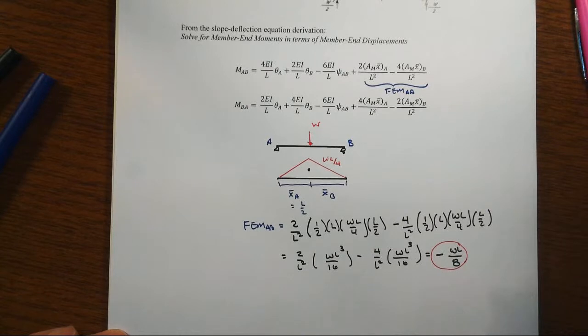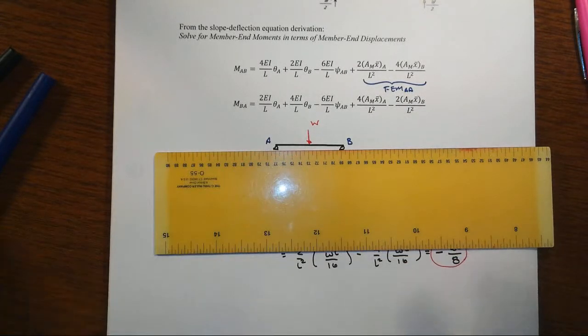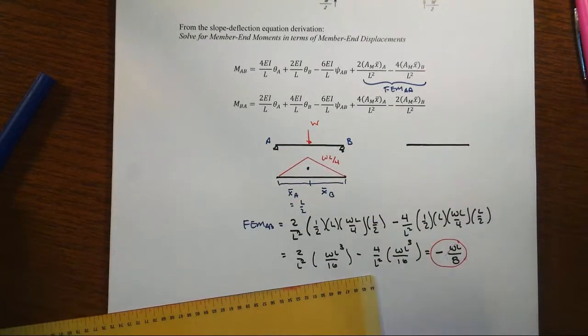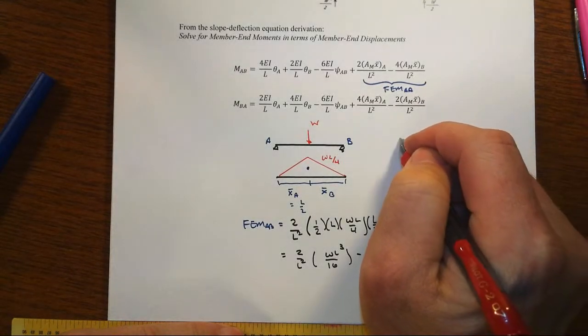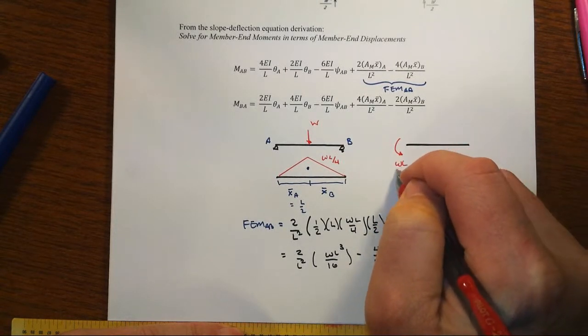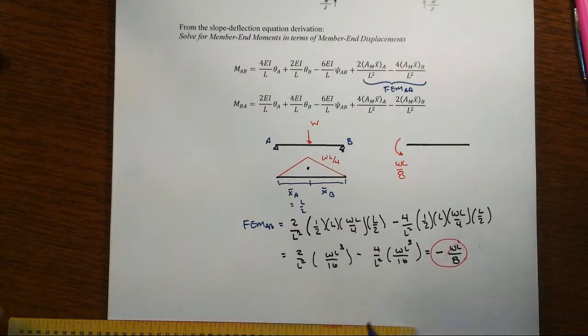Now remember here that the sign convention is clockwise positive for our formulation of the slope deflection equation, so that minus on the left actually says that we have a counterclockwise moment being applied in response to the load.